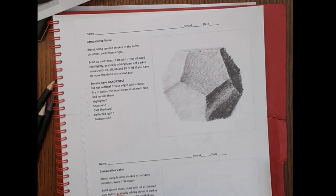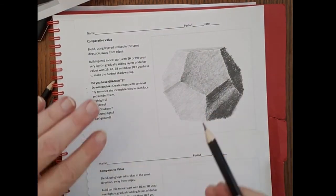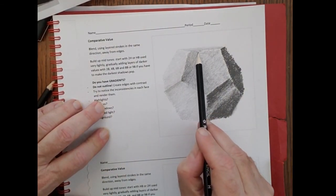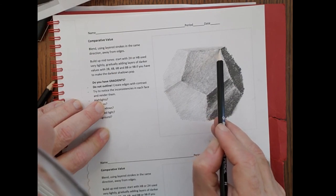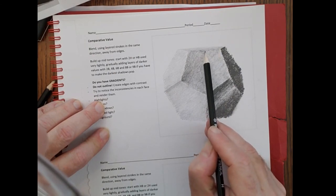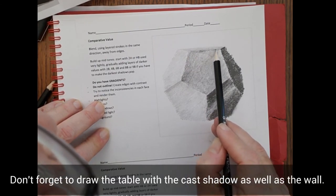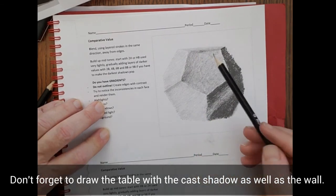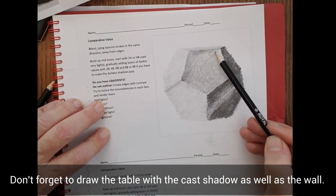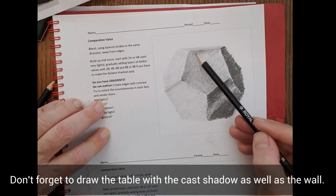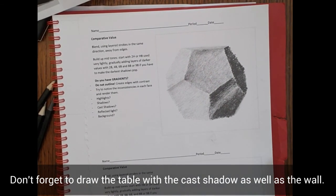I guess I'll go back to the H pencil I was just using. Get rid of this spot. So I'm just going to darken this in just a little bit more. I think I had a 2B a second ago and it was just too dark. Just no way to make it not super dark. And now I would draw the table right around it and finish up my drawing.